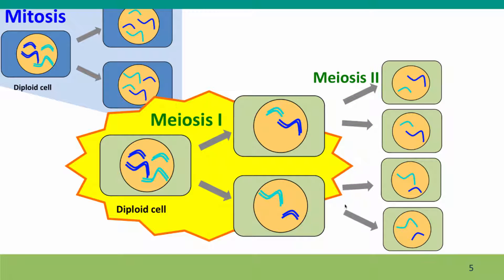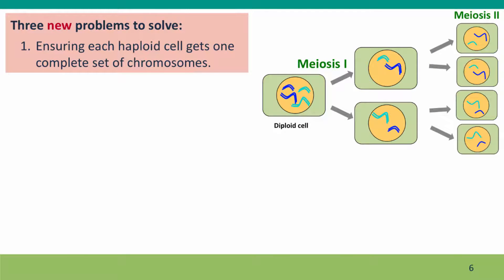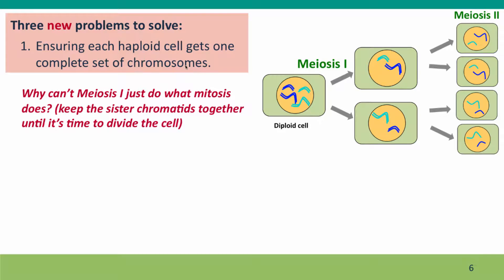Meiosis 1 is the process where all the interesting new things happen, and meiosis 2 is basically just like mitosis. So, as I said, meiosis has three new problems to solve, and in this lecture we're going to talk about the first problem: ensuring that each haploid cell gets one complete set of chromosomes — whether the two haploid cells each have two sister chromatids or each have one sister chromatid.